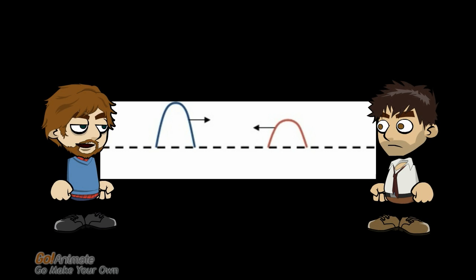Suppose two wave pulses are traveling towards each other on a string. The diagram shows the situation. We can describe the wave pulses by their amplitudes. The blue pulse has an amplitude of two units and the red pulse, an amplitude of one unit.